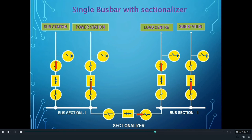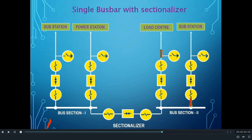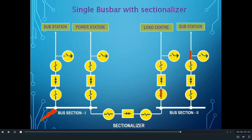Let us see what happens in case of a Busbar fault in this scheme. When there is a fault in Bus Section 1, during the actuation of relays of Feeder 1, Feeder 2, and the Bus Sectionalizer, the circuit breakers of Feeder 1, Feeder 2, and the Sectionalizer will open. But the remaining part — Bus Section 2 — will work as it was before. So the feeders connected to Bus Section 2, that is Feeder 3 and Feeder 4, will work normally as before.